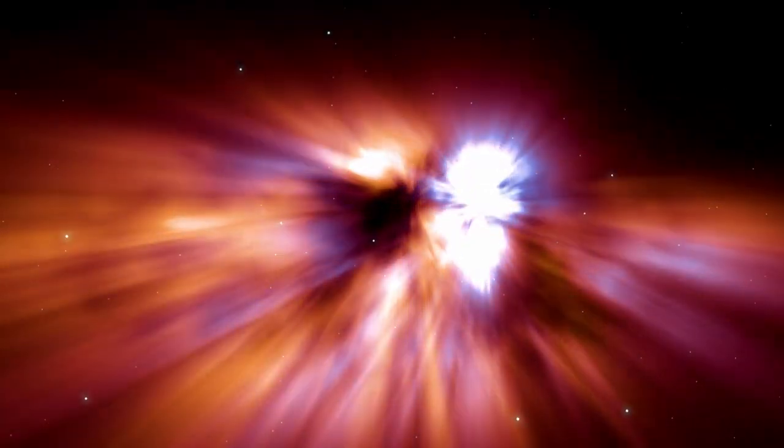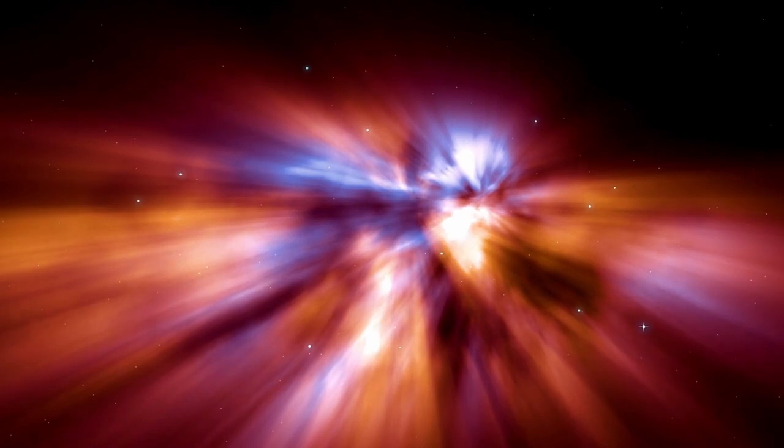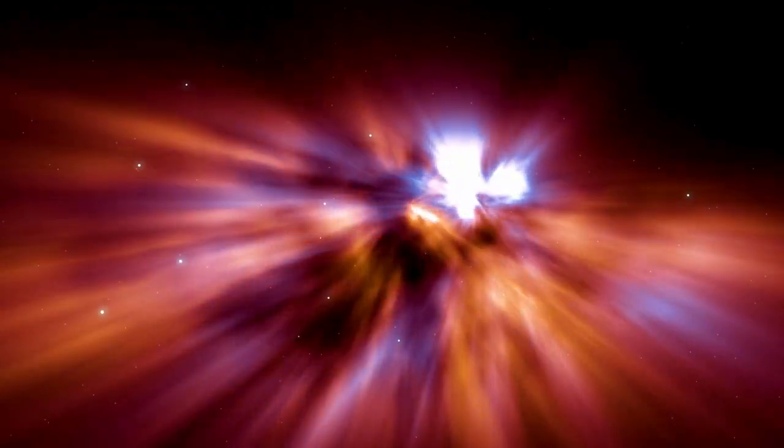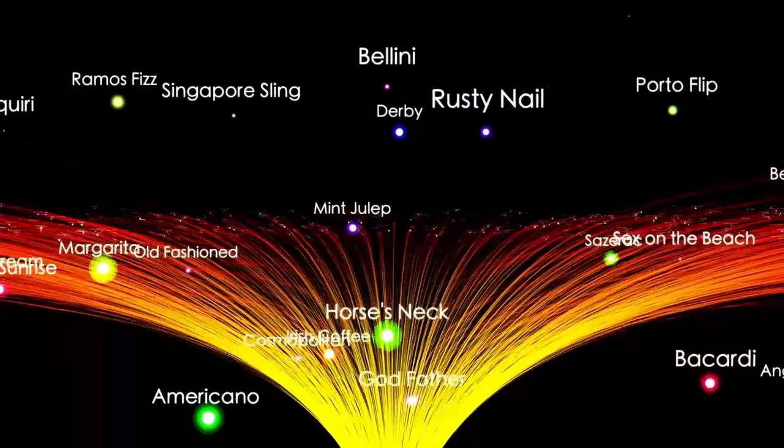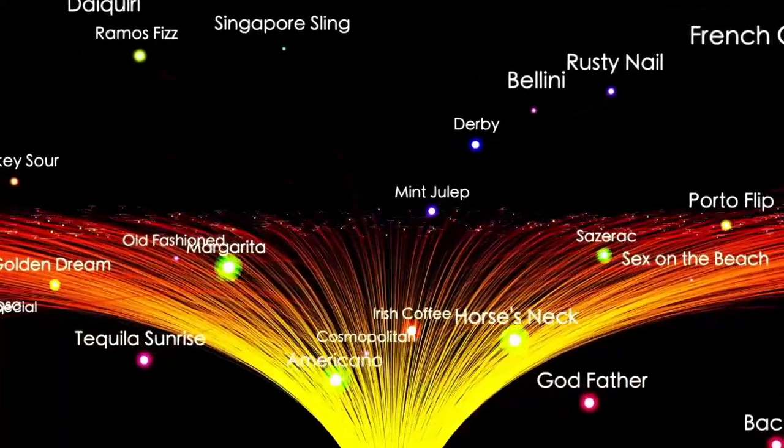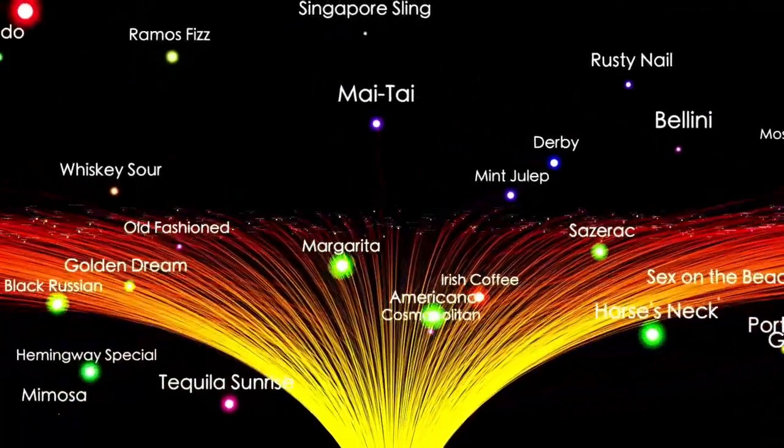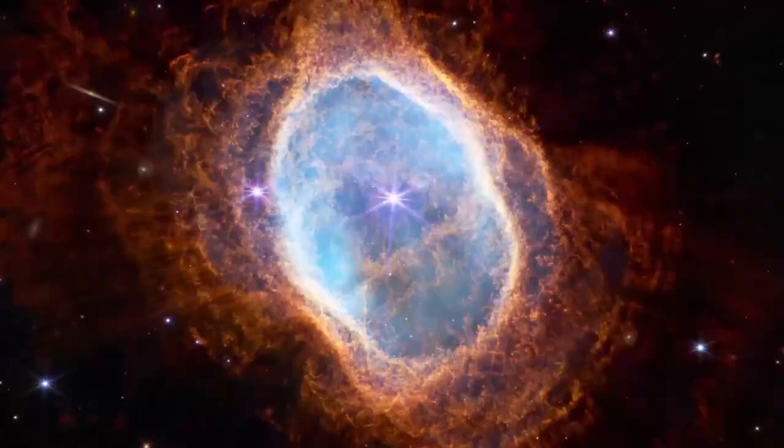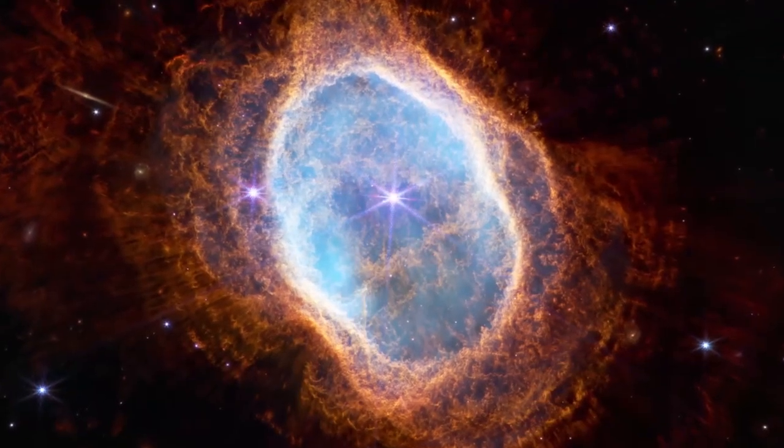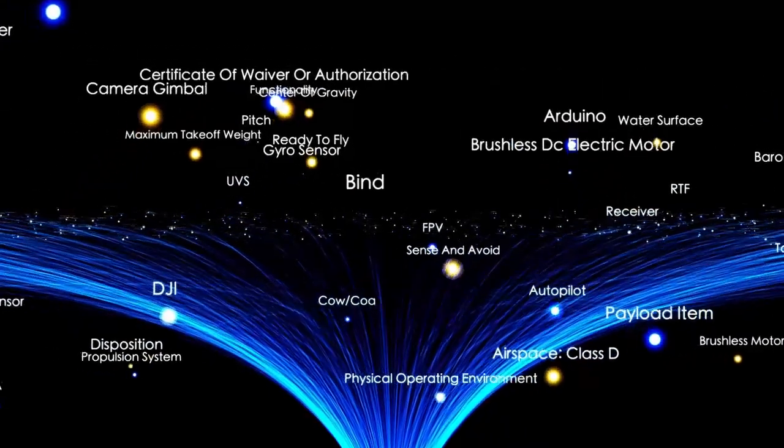This led to the question: what had truly happened with Betelgeuse? All the available evidence strongly suggested that Betelgeuse had undergone an immense and unprecedented event known as a surface mass ejection (SME). This phenomenon bears similarities to coronal mass ejections (CMEs) observed on the sun.